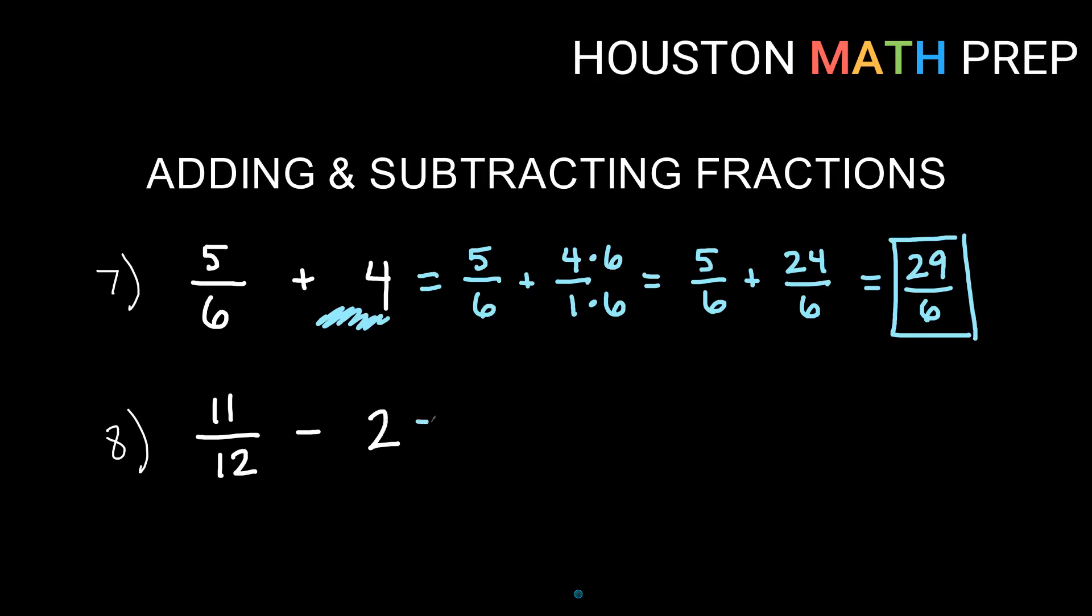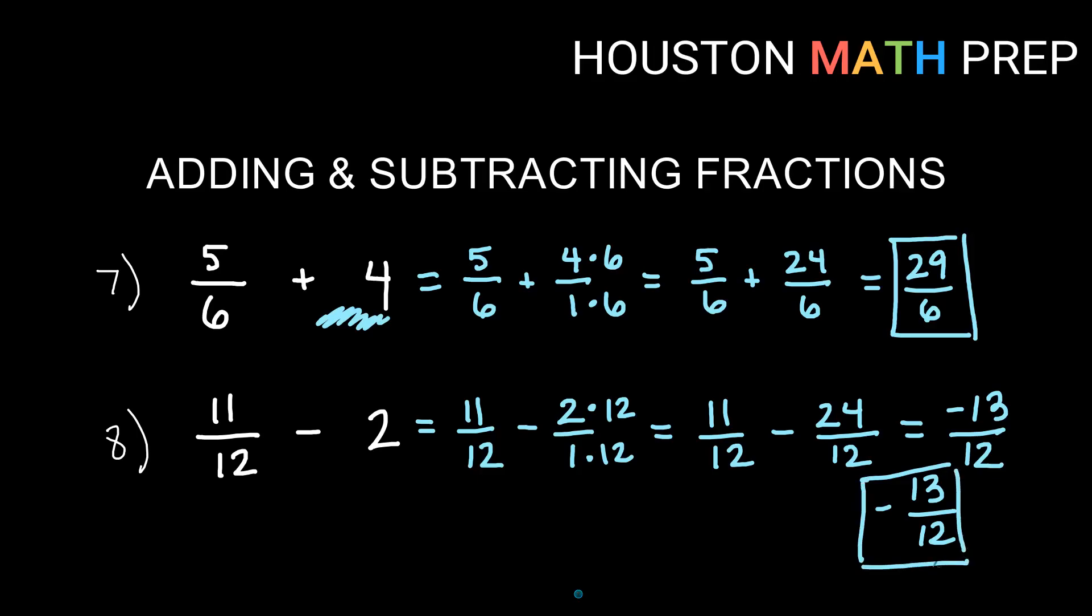For this one, 11 over 12 minus 2. So again, we'll do the same thing and think of our whole number as over 1. 2 over 1. 2 divided by 1 is still 2. So now, instead of before where I just changed everything into over 6 because I already had over 6, this one goes into 12. So I just need to multiply this one by 12. And that will allow us to do the subtract. So we get 11 over 12. We keep that. Minus 2 times 12 on the top is 24. The 1 times 12 on the bottom, we get 12 there as well. And then just be careful with your signs here. Keep the 12. And 11 minus 24, because 24 is the bigger number, we get negative 13. And if we want to use some good manners there, we'll write the negative outside of the fraction. So there's no guesswork for anybody who looks at our answer.